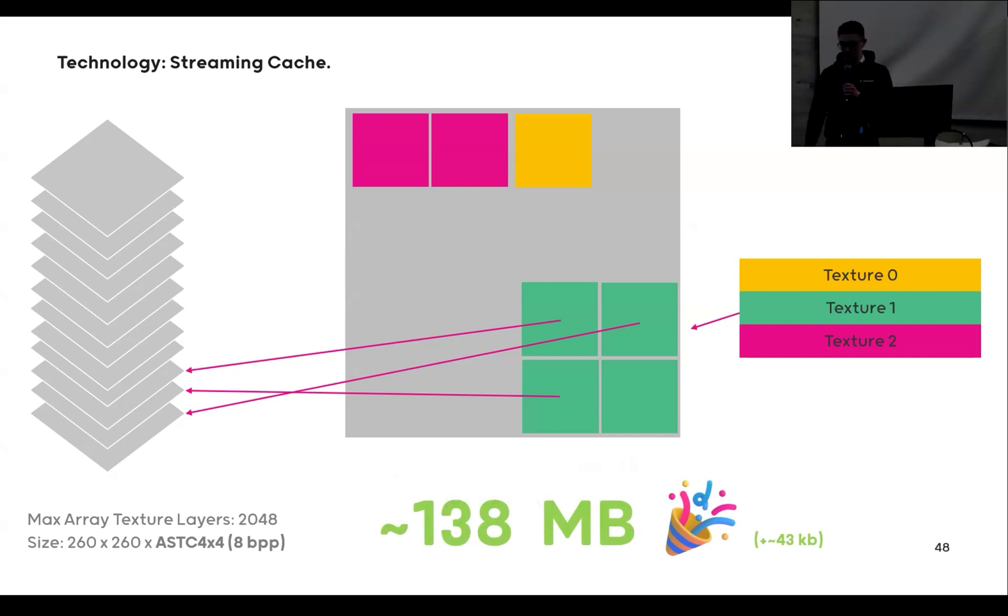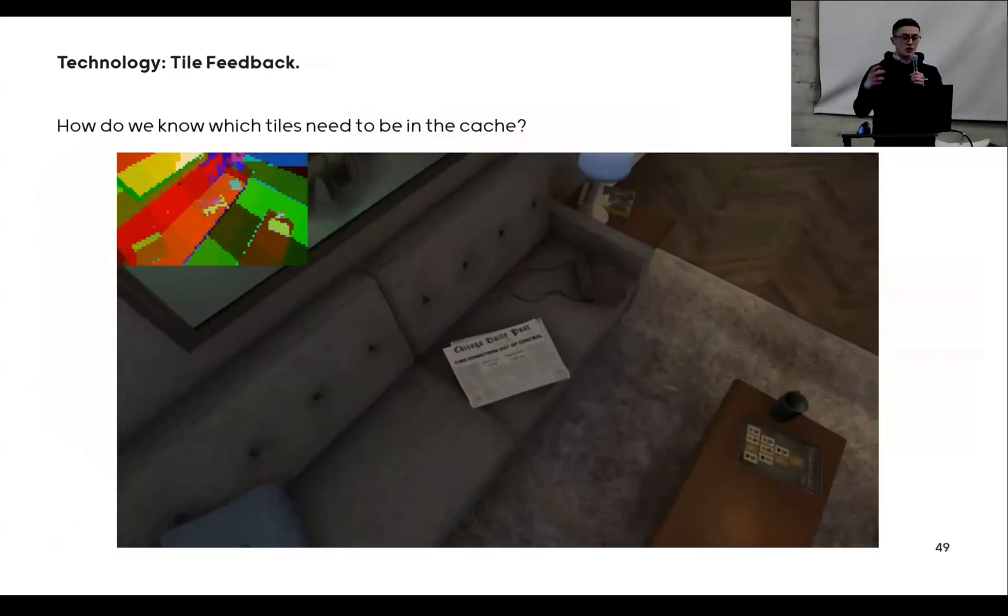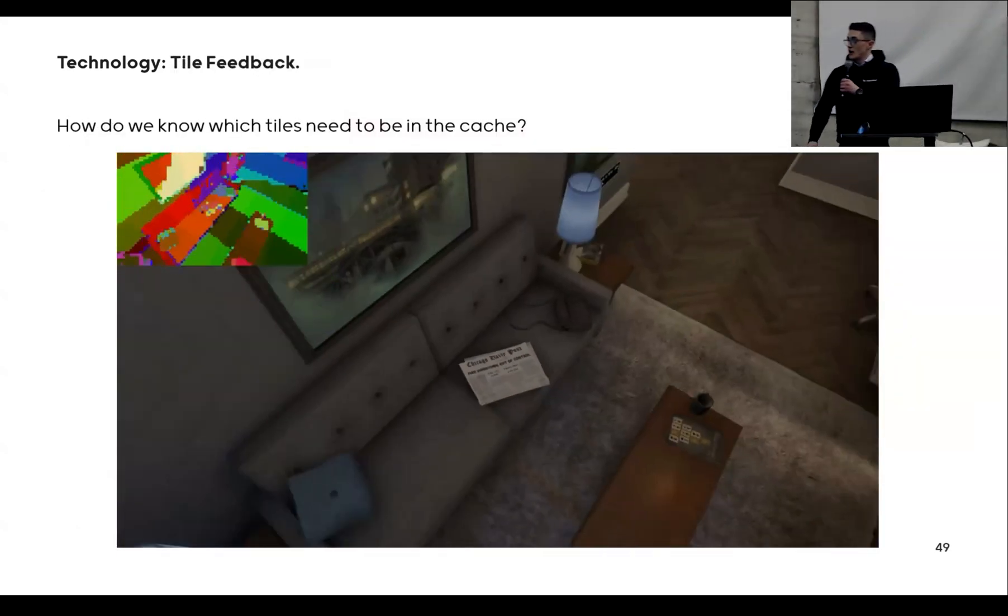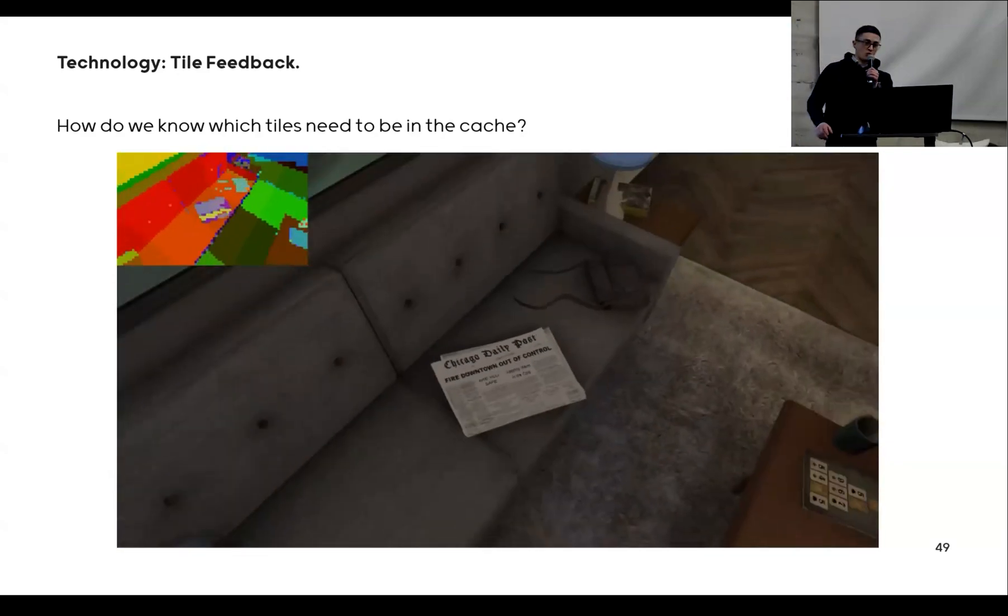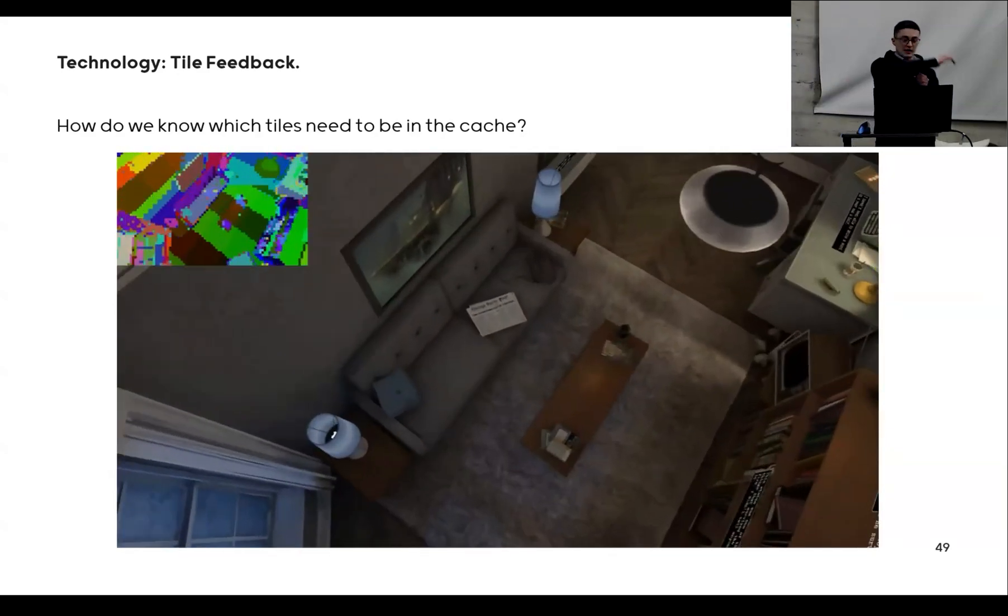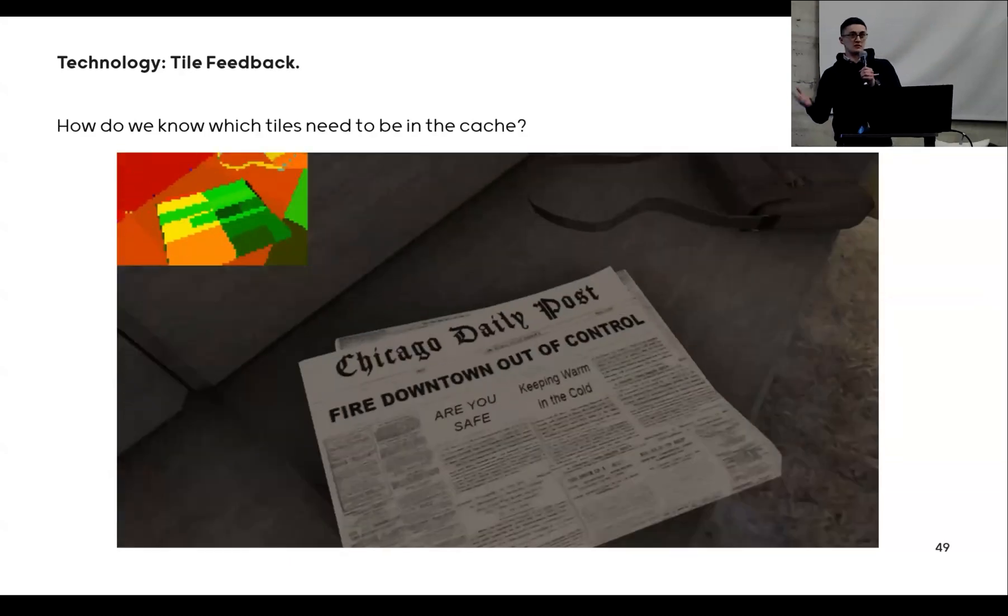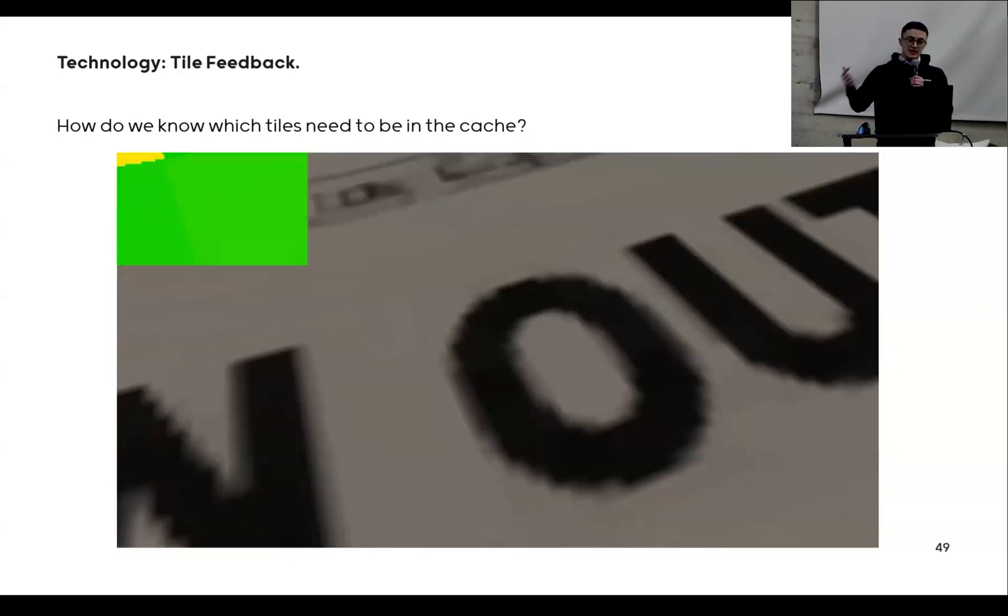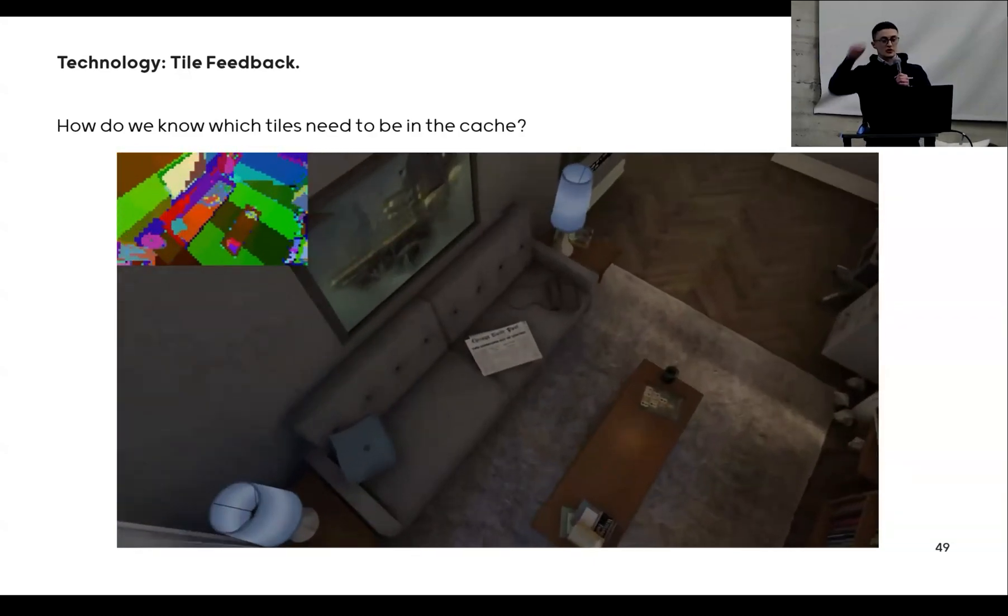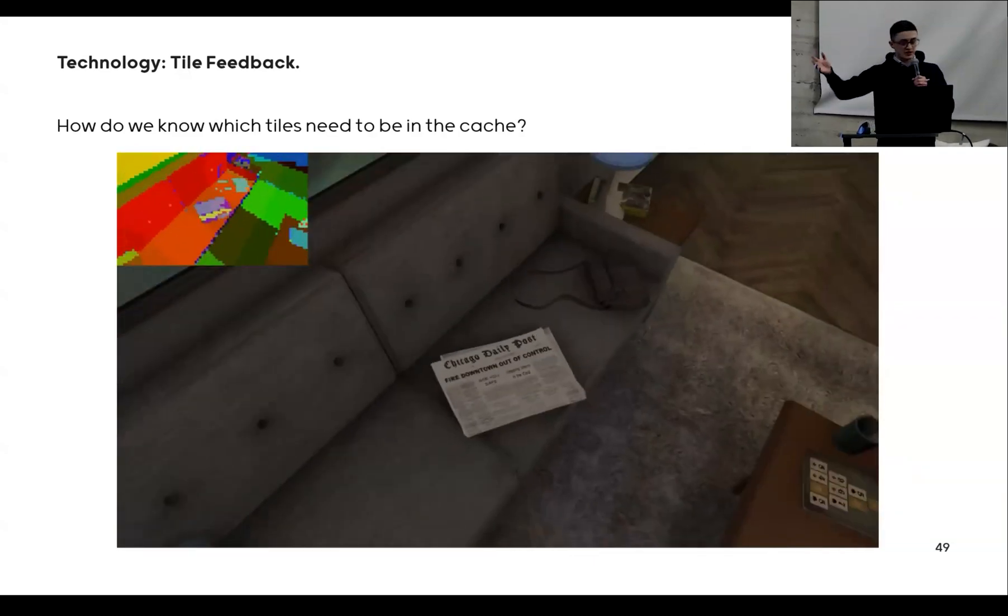And that works. That's 138 megabytes, plus a little bit of an indirection texture. That's amazing. So how do we know what tiles we actually need in the cache? On requestAnimationFrame, we render a second frame where basically the entire scene gets another pass, because everything is basically just five draw calls or something like that. That's super easy to do. And it renders which tile at which resolution is required for which pixel.